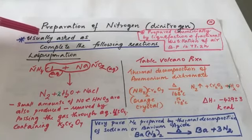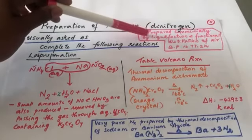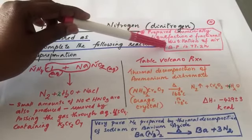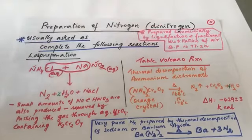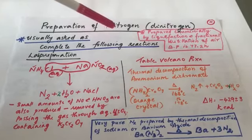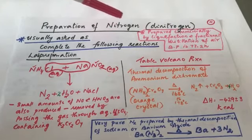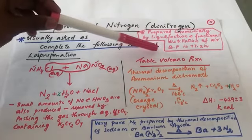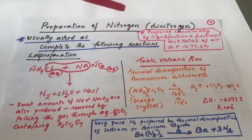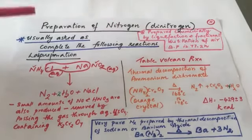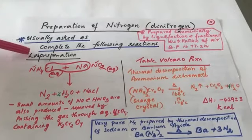The commercial preparation of dinitrogen — we studied part of it in ninth class — is by liquefaction and fractional distillation of air. Its boiling point is 77.2 K. We cool the gas, liquefy it, and then fractionally distill it. During fractional distillation, different fractions of air distill out, and nitrogen comes out before oxygen. That is how nitrogen is prepared commercially.